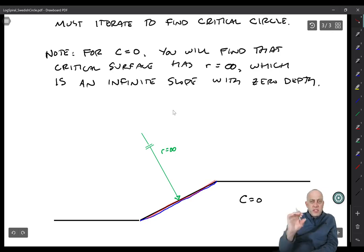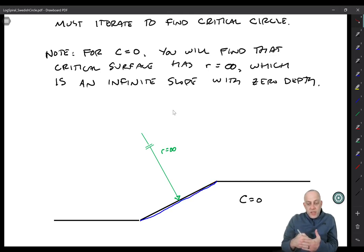So an infinite radius would be where this blue line is actually coincident with the slope. And you should just use the infinite slope analysis. So always remember that if you have c equals zero, you shouldn't even use a computer program. You shouldn't use Swedish circle or log spiral, just do infinite slope calculation.